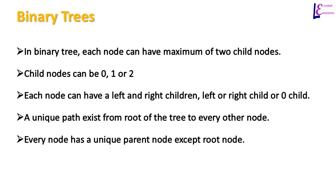In a binary tree, each node can have a maximum of two child nodes — that is, a node can have two, one, or no child at all. Actually, every tree you will study will be a binary tree. If it does not have the property of a binary tree, it will be considered a graph.